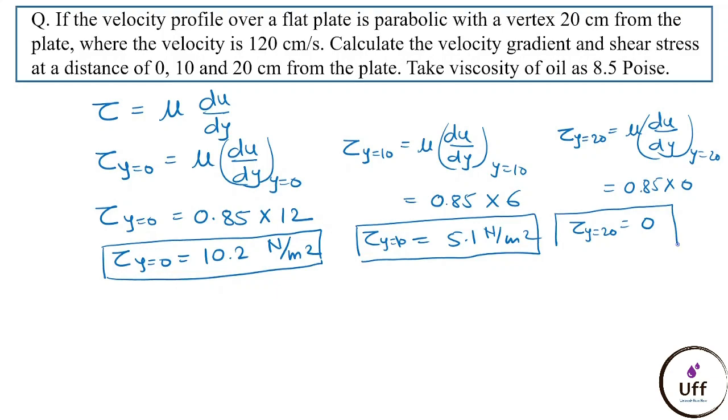We can observe that where velocity is maximum (at y = 20 cm), shear stress is minimum — nearly zero. This confirms the relationship between maximum velocity and zero velocity gradient.